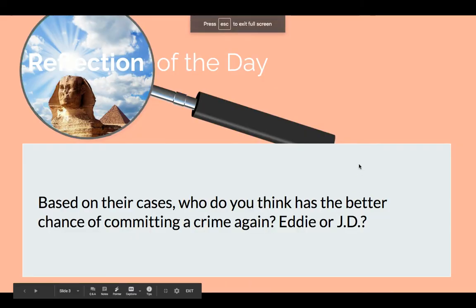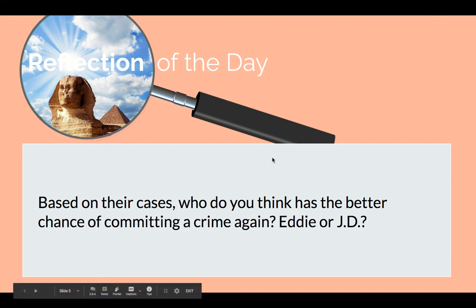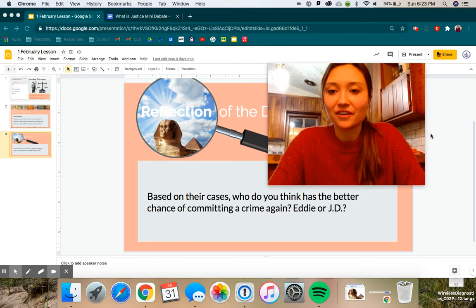Your reflection of the day today is: based on their cases and each person's circumstance, who do you think has the better chance of committing a crime once again — Eddie or JD? Do you think Eddie has a better chance of shoplifting again, because he really only got in trouble with his parents and didn't have to serve any time or pay anything at all? Or do you think JD has a better chance of committing a crime after going to jail for 10 years? It's a personal opinion — there's no right or wrong answer. That's it for today. Go ahead and finish up and have a great rest of your Monday.